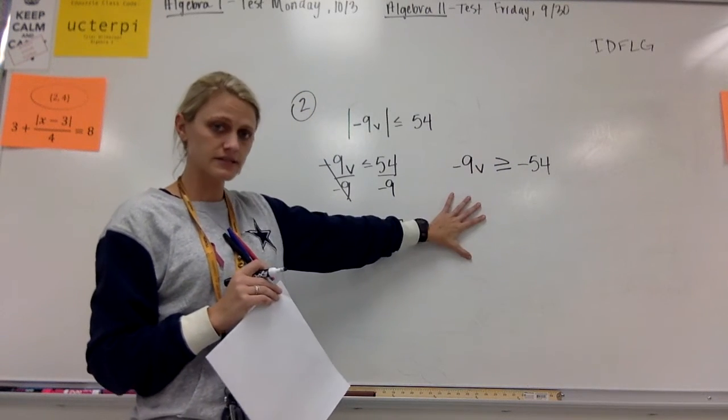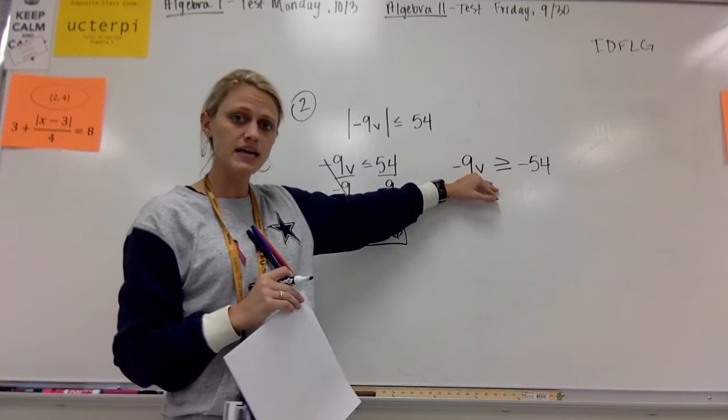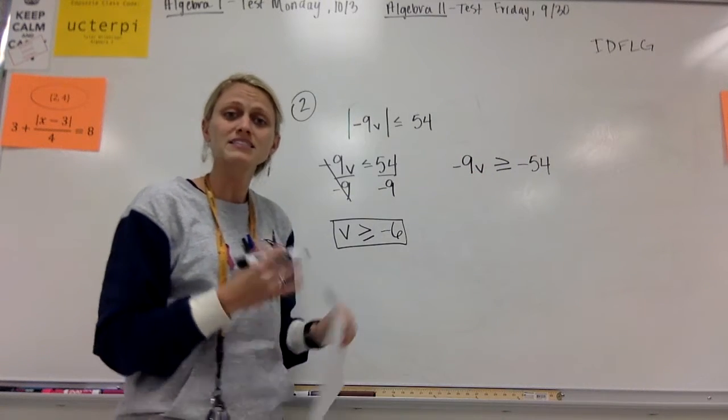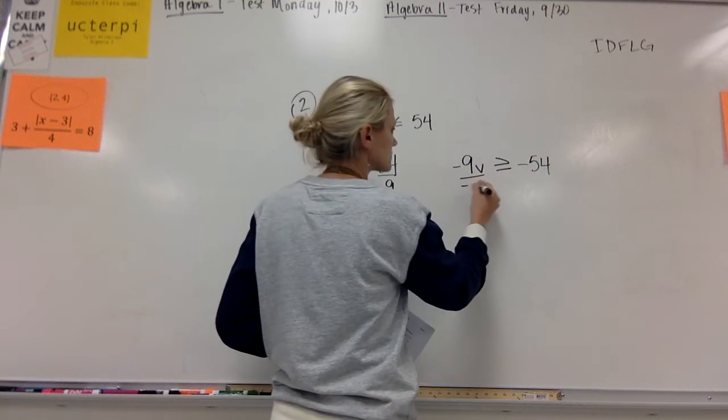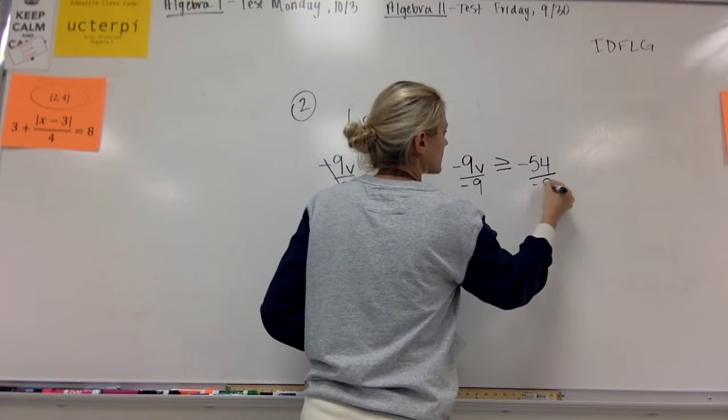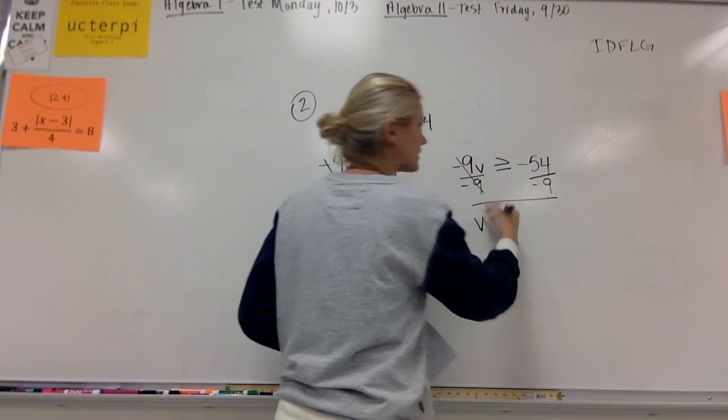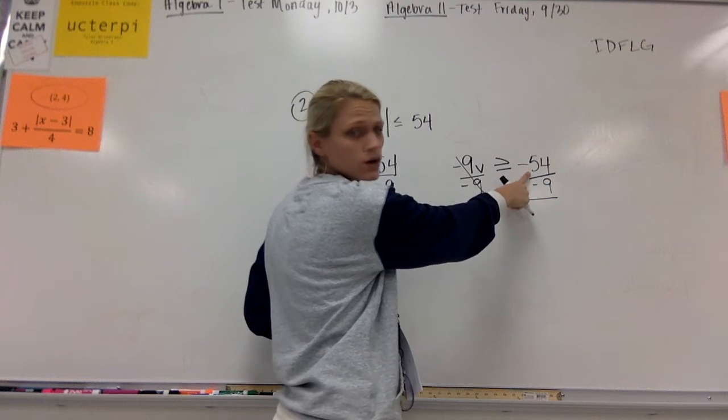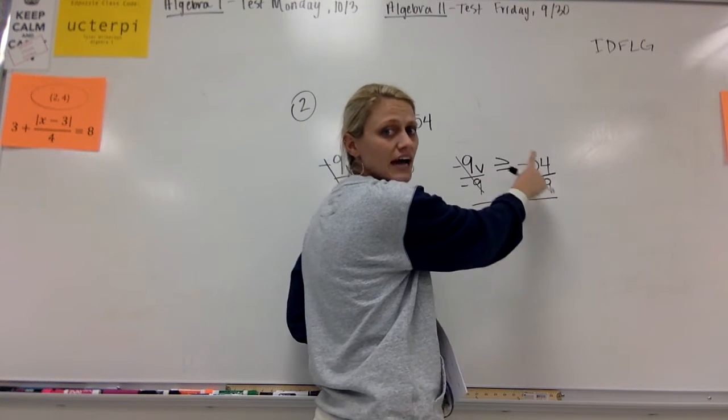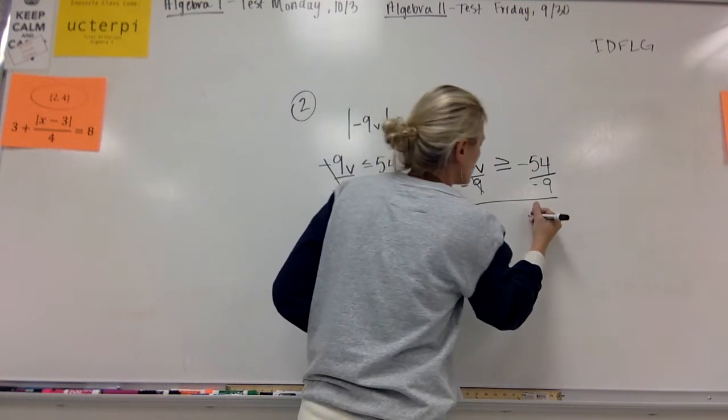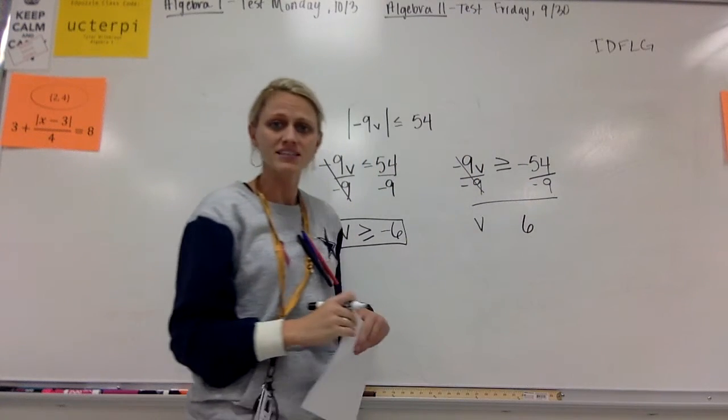So that was my first answer. I've got my second answer over here. Again, my same next step. I'm going to get the V by itself by dividing by a negative 9. So V, a negative 54 divided by a negative 9, negative divided by a negative is a positive 6.